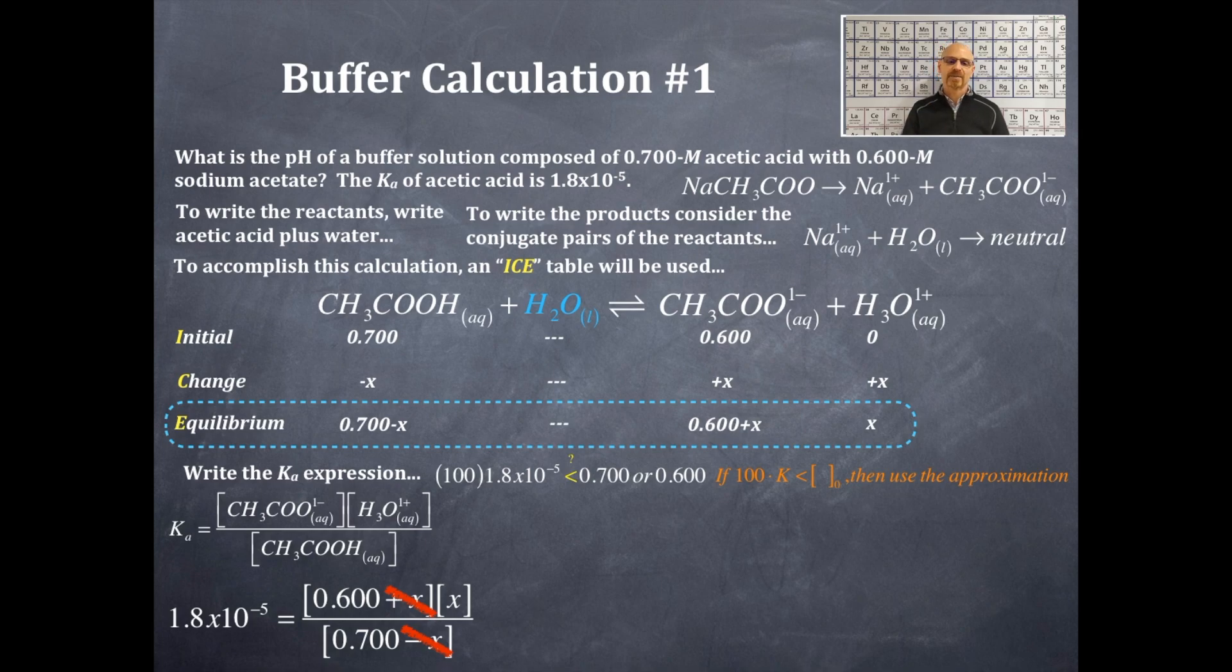And that's the number set that I get here. So now I have 1.8 times 10 to the negative 5 is equal to 0.600 times x divided by 0.700. I'm going to solve for x. That is, I'm going to multiply the Ka by 0.7 and divide the Ka by 0.6 in sequence, and then I will solve for x. And x is equal to 2.1 times 10 to the negative 5.